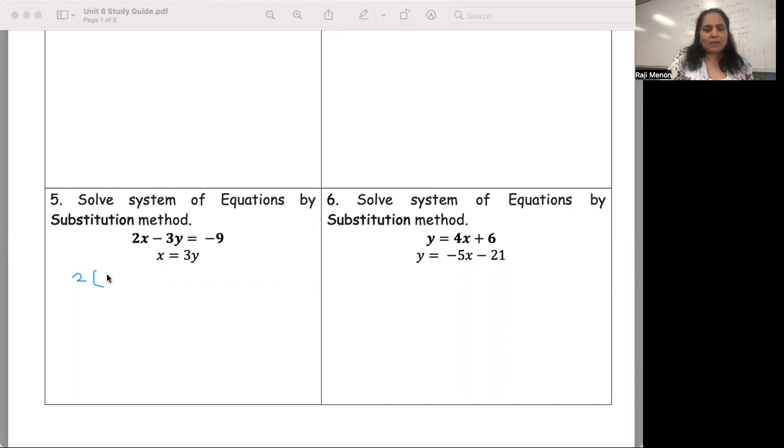Instead of the x there, we are going to pick that guy and put that 3y there. So you need to see that where I substituted, I picked this x from here, the value of x from there, and put it there. Then minus 3y.